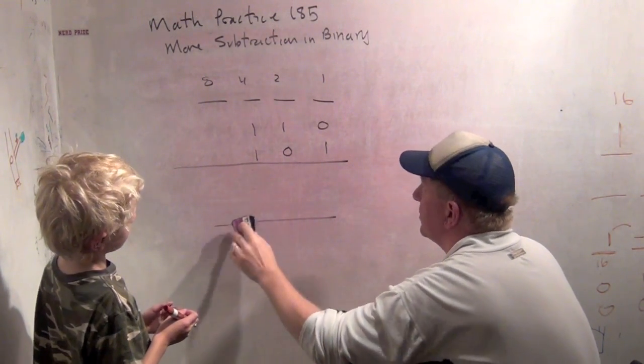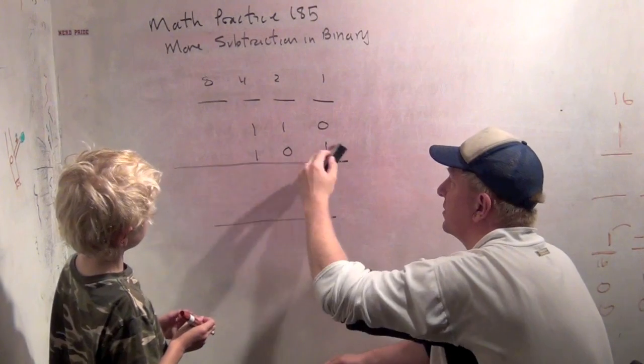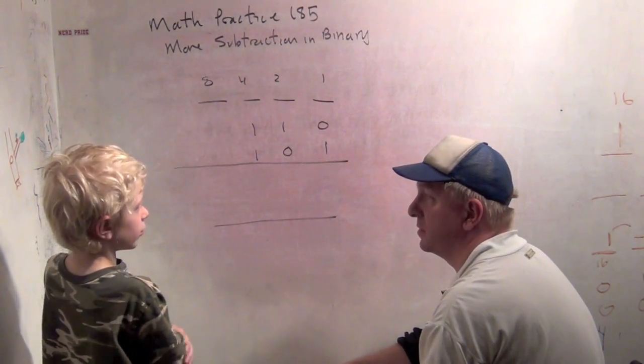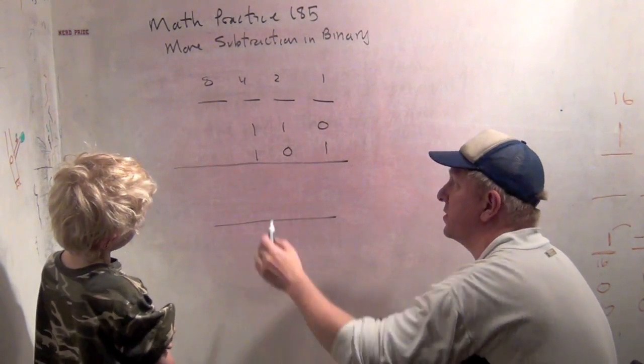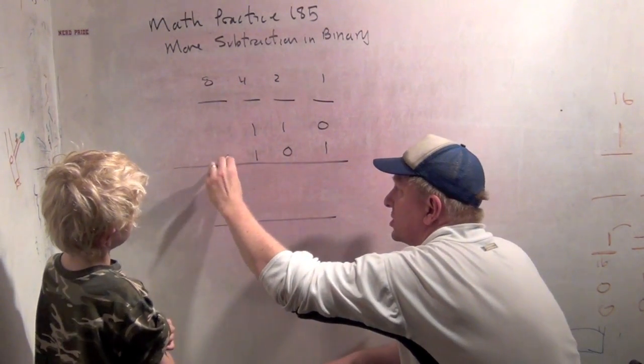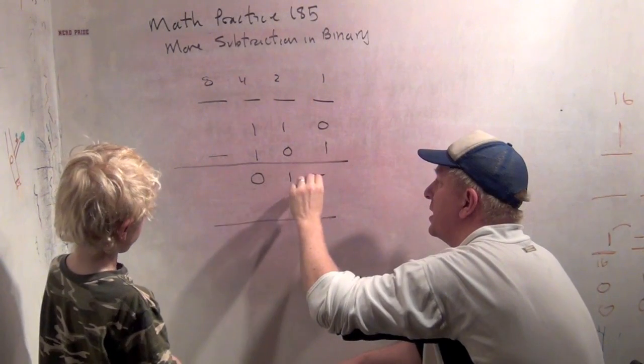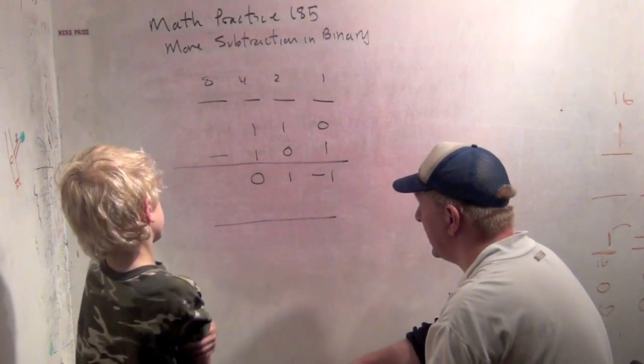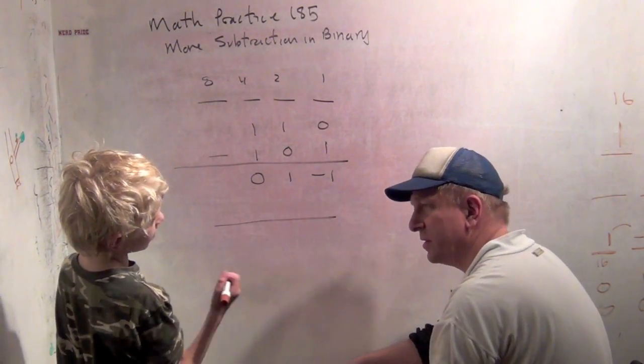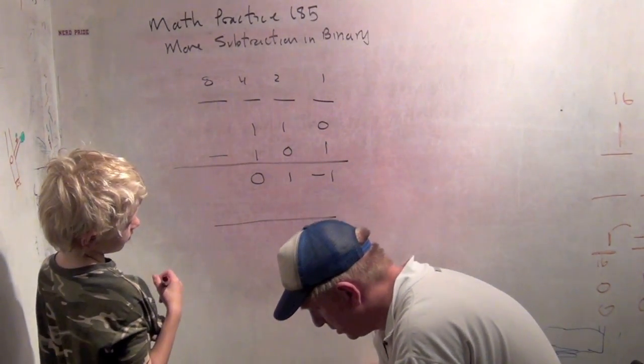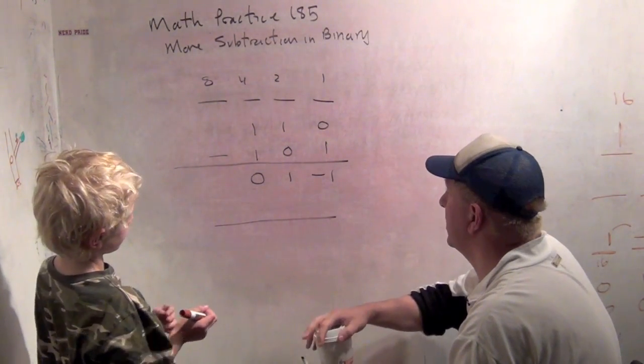Okay, actually we can use the same number. Six minus five. We would get one. We should get one. So let's see what happens when we do subtraction. We get a zero, one, minus one. Now, we can't have minus ones. Minus ones aren't good in binary.